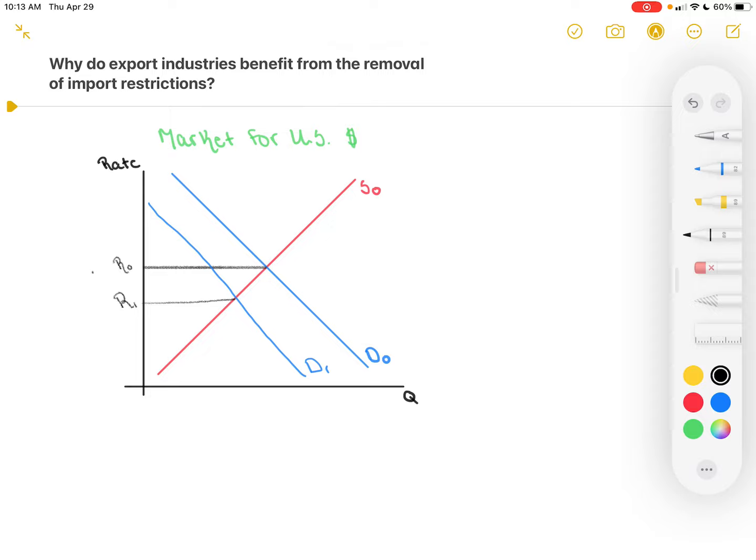Because our real exchange rate is dropping, we can expect then to see increased exports as a result, because all of a sudden the US dollar has become cheaper.